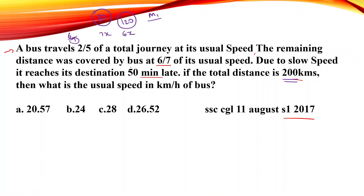How do we calculate this? When we travel at a certain speed, there is no delay. The time is distance divided by speed. According to the time calculation, the new time for 120 km at 6x speed is 120 divided by 6x, which gives us 100 by 6x.